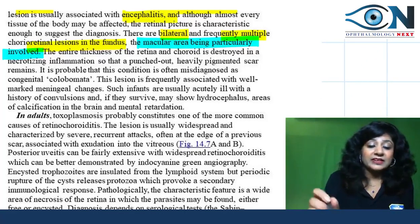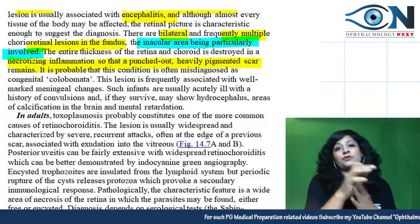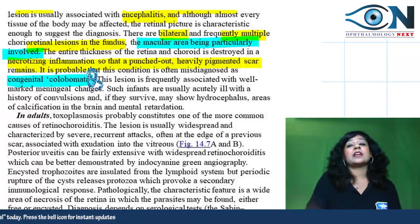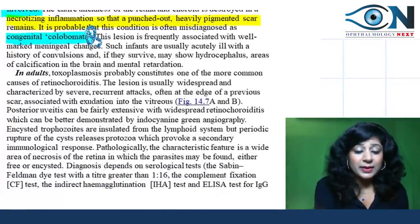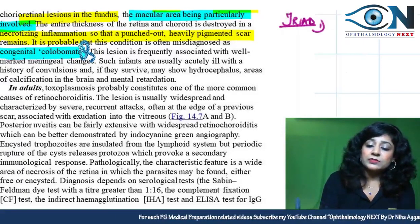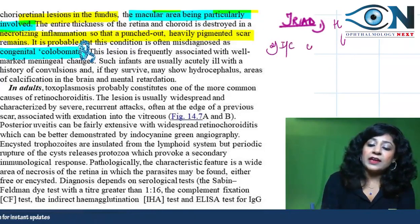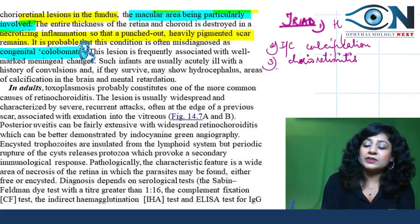The entire retinal and choroidal thickness is involved, resulting in necrotizing inflammation with punched-out areas — resembling the appearance of congenital coloboma in differential diagnosis. The classic triad of congenital toxoplasmosis is: (1) hydrocephalus with convulsions, (2) intracranial calcification, and (3) chorioretinitis.